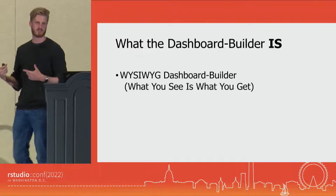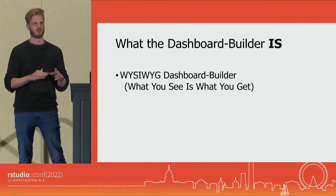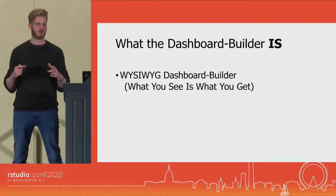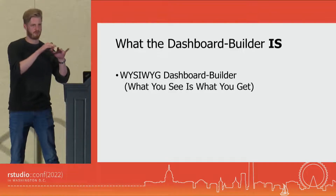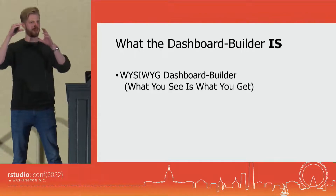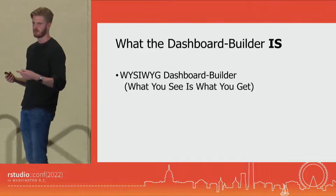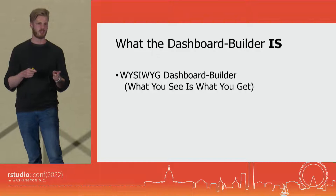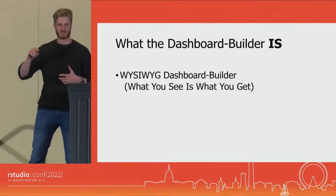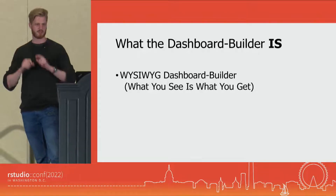WYSIWYG means what you see is what you get. R Markdown is not WYSIWYG, because you have to build it — if you want to increase the size of a picture, you put in width 50%, width 70%, build it, then see it's too small and go back to the code. Compare this to PowerPoint, which is WYSIWYG: you click on the image, scale it, and that's how big it is — what you see is what you get.